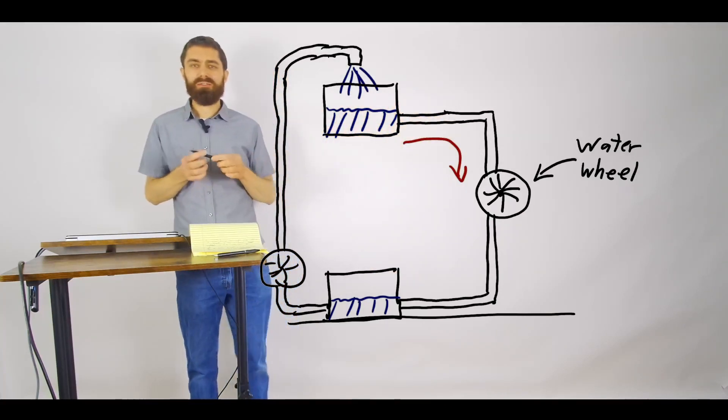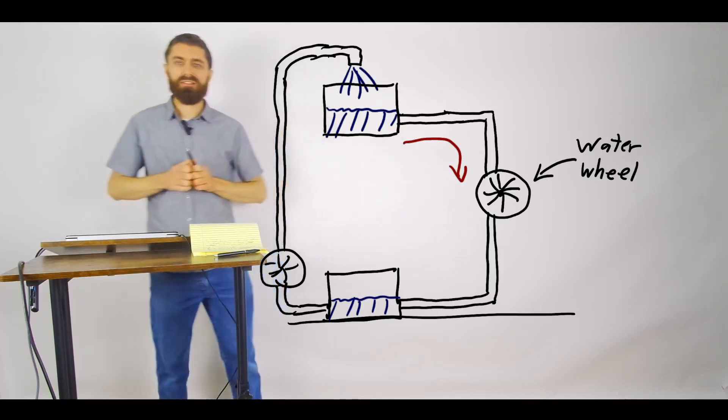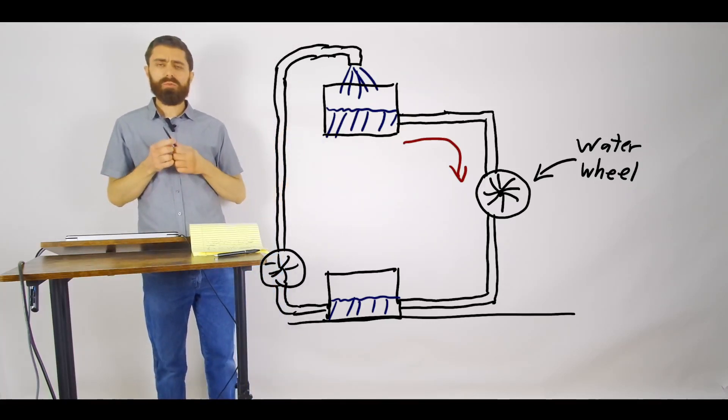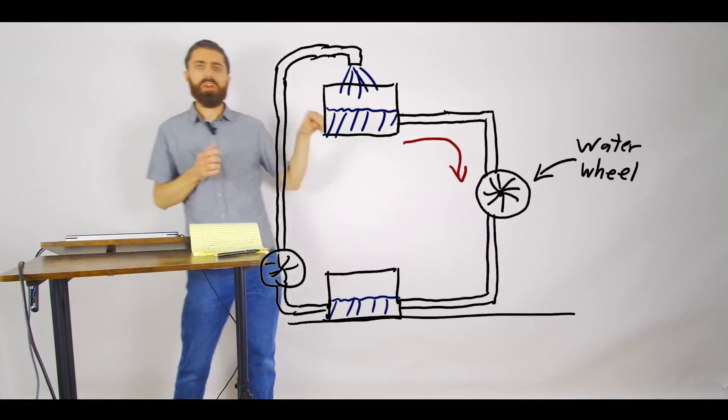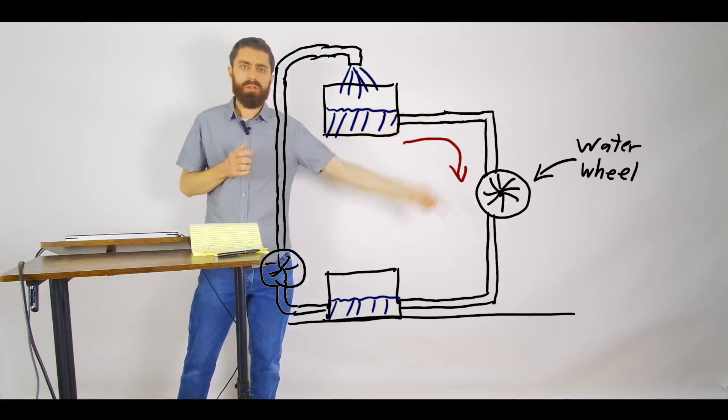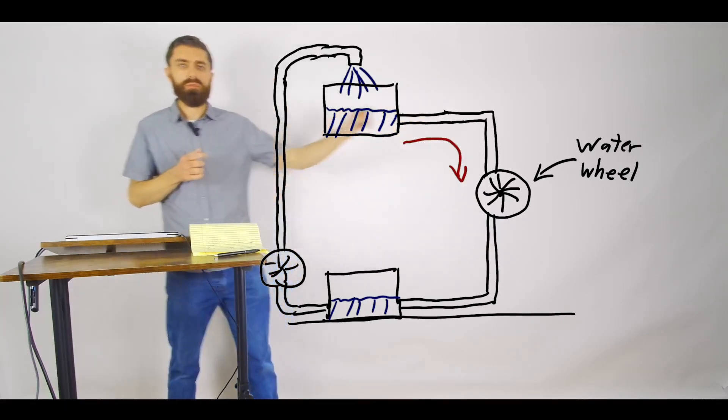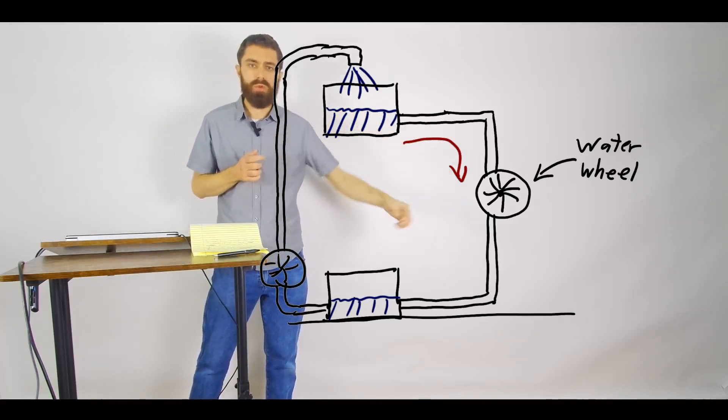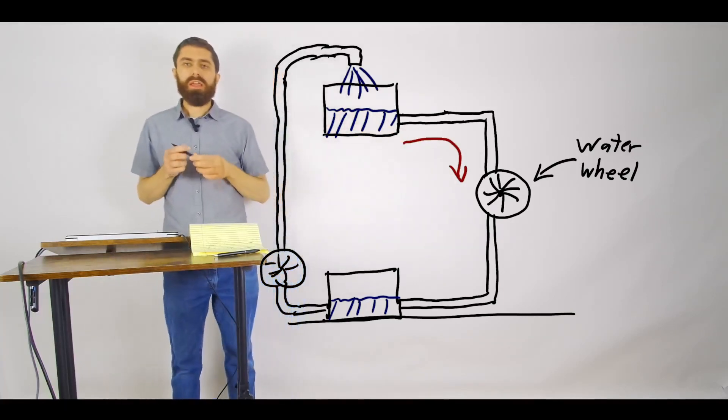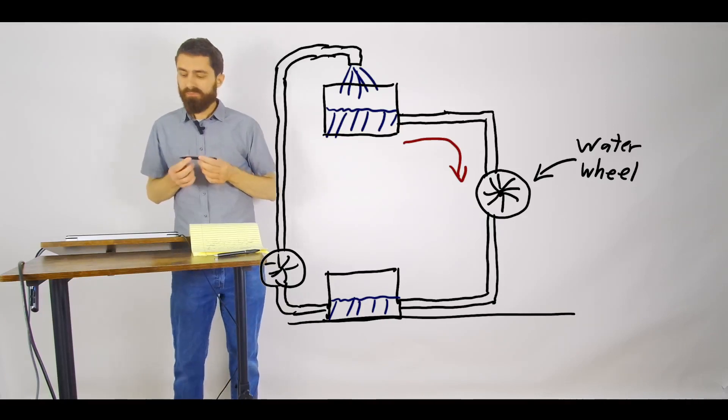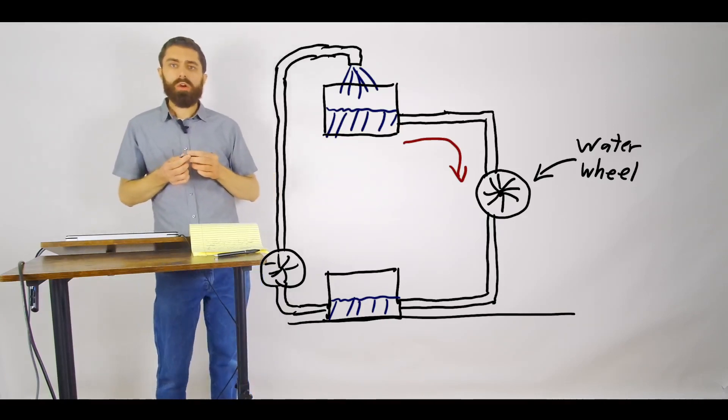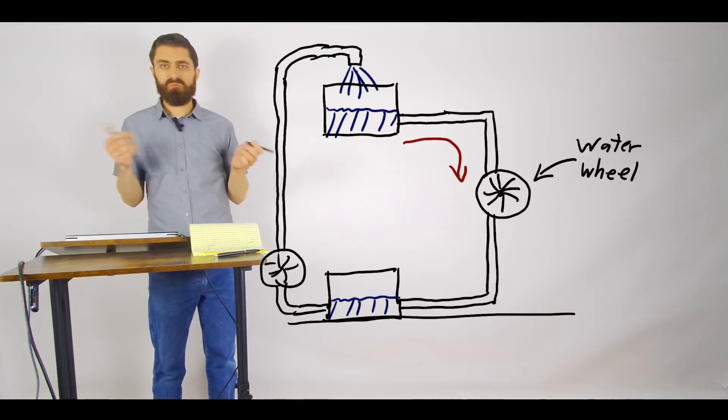So we can say that the thing that is really moving the water through this water wheel is a difference in potential energy. And so we could call this voltage.